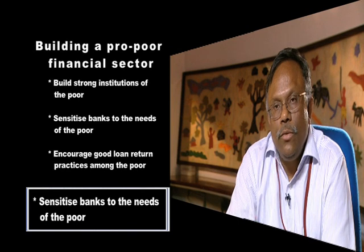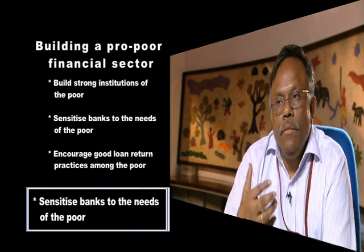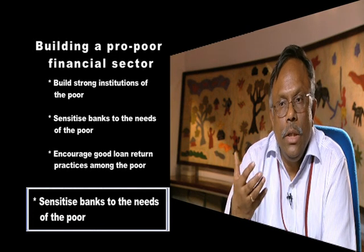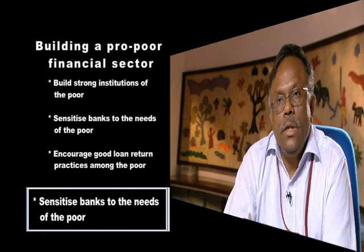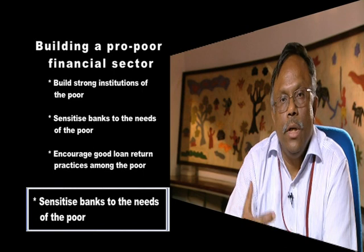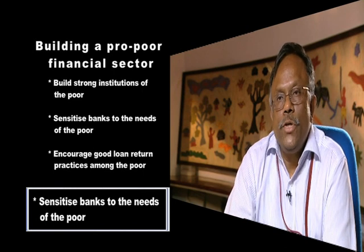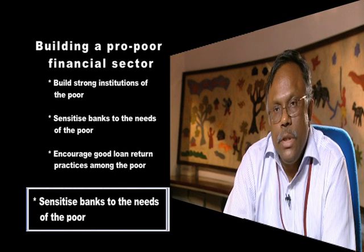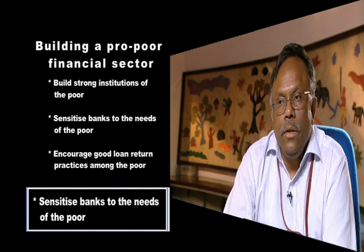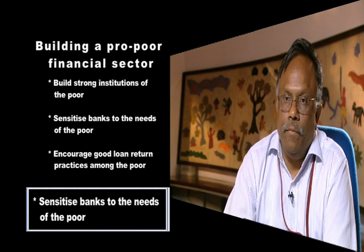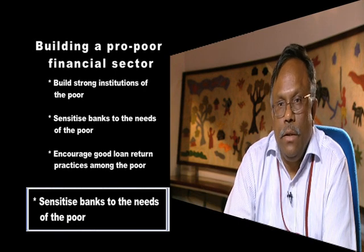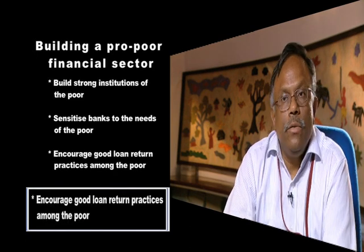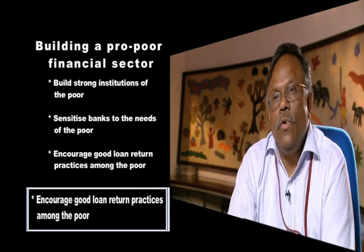On the supply side, we would like to work with the banks and bank staff to orient them about the potential of the poor and the strength of their institutions in terms of financial discipline and their preparation of micro-investment plans to prioritize their needs. Sensitizing the bank machinery is a very important task and we believe that financial inclusion holds the key, since we estimate that about 100,000 rupees per family is required and 90-95% of this has to come from linkage with the formal financial sector.